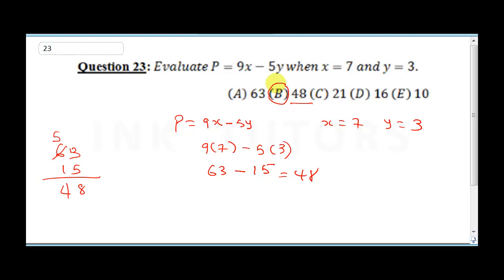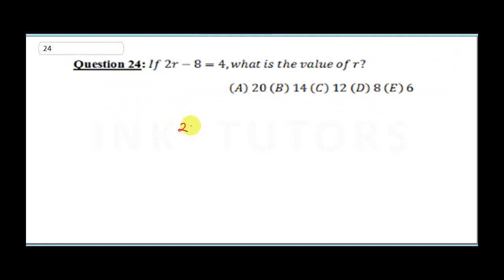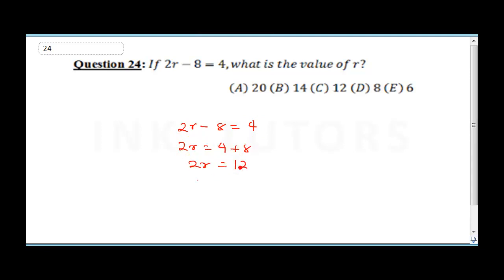Question 24 says: if 2r minus 8 equals 4, find the value of r. Collecting like terms: 2r equals 4 plus 8, which is 12. Therefore r equals 12 over 2, which gives r equals 6.